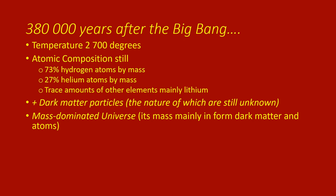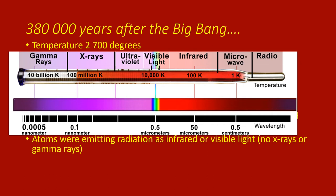It was a mass-dominated universe. The mass was mainly in the form of dark matter and atoms. And because of its temperature, the atoms were emitting energy in infrared or visible light wavelengths. There weren't any of the short energetic rays such as x-rays or gamma rays.